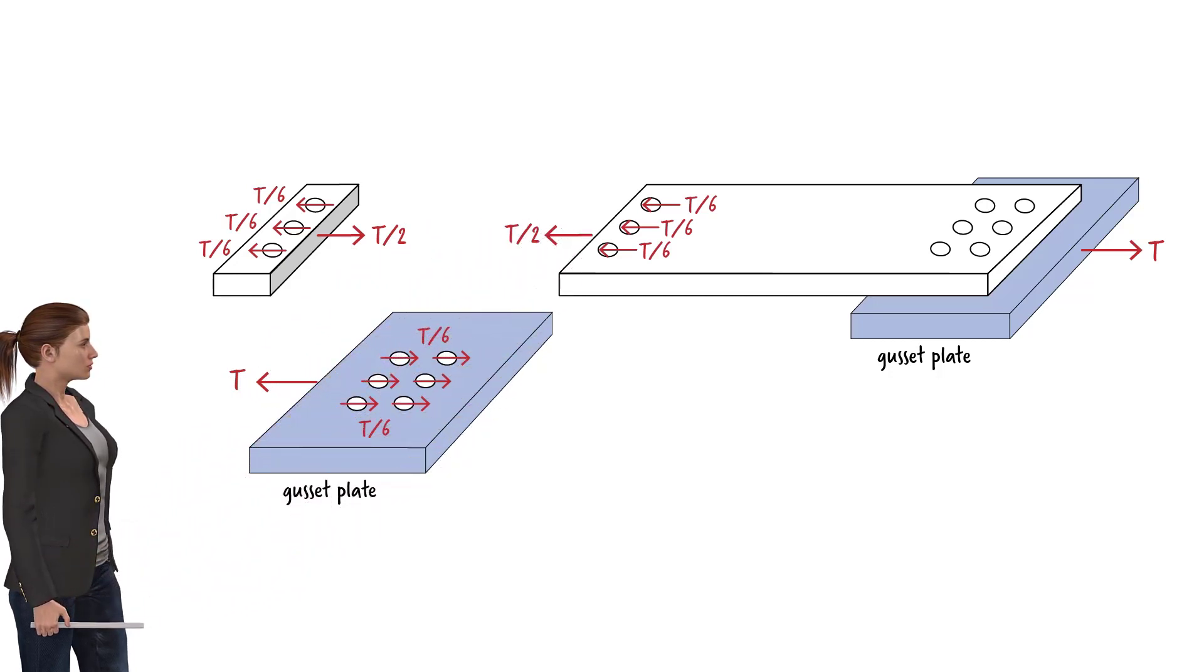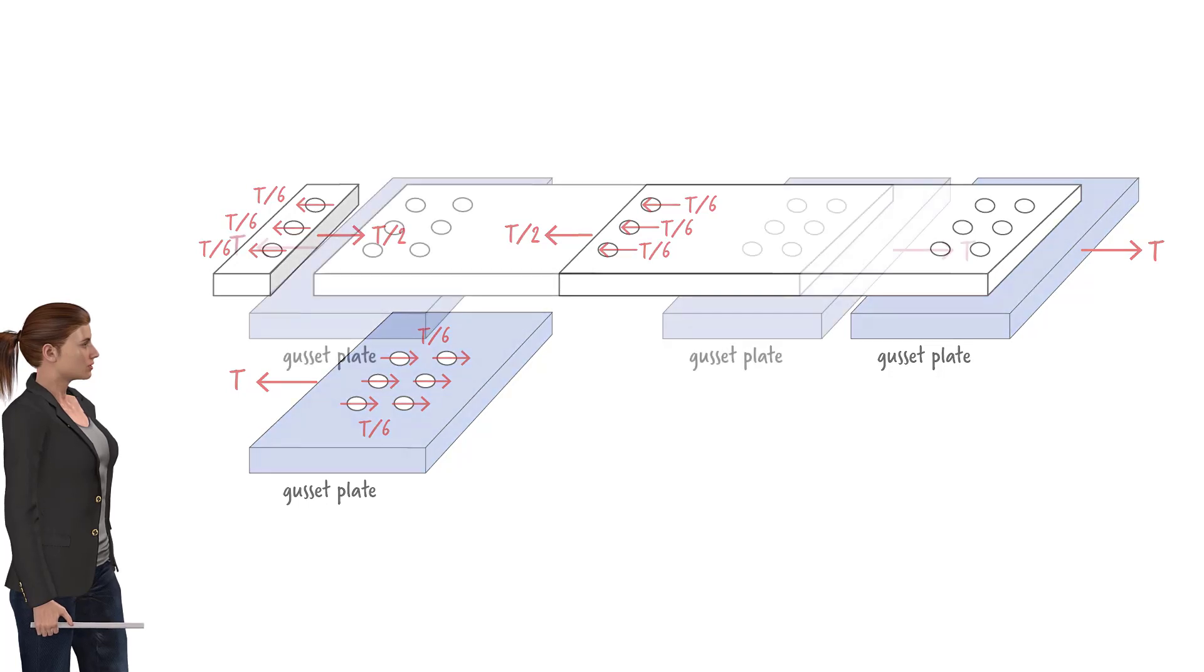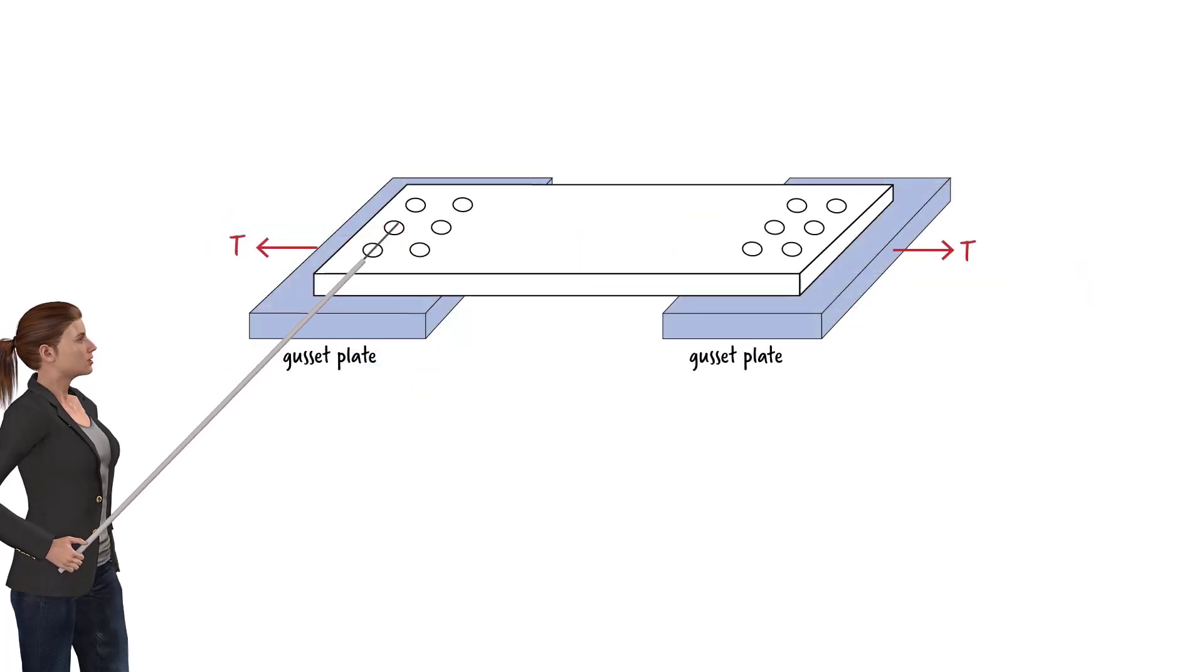From this free body diagram, we can conclude that the axial stress along this path is significantly less than the axial stress along this path. Hence, the path further away from the member's end is considered the critical path for rupture of the net section.